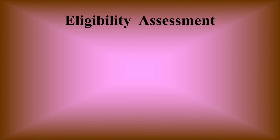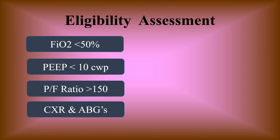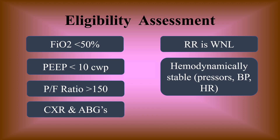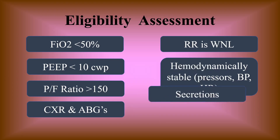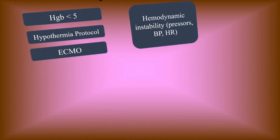Let's begin with the eligibility assessment. You want to make sure they're on reasonable vent settings — not on super high FiO2, super high PEEP — they have a reasonable P/F ratio, their x-rays look good, their ABGs look good. Make sure they're not tachypneic, their respiratory rate is within normal limits, they're hemodynamically stable, don't have a lot of pressors, and have a stable blood pressure and heart rate. Also make sure they'll be able to keep a patent airway without tons of secretions.